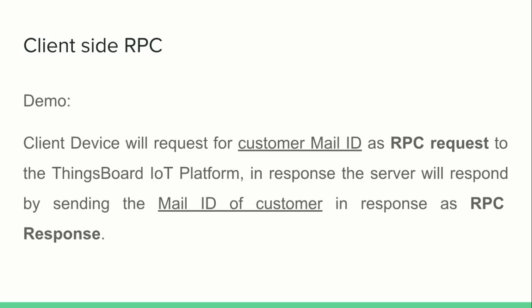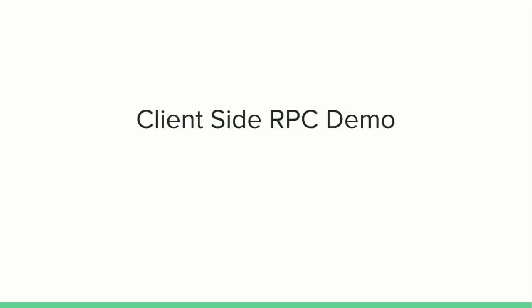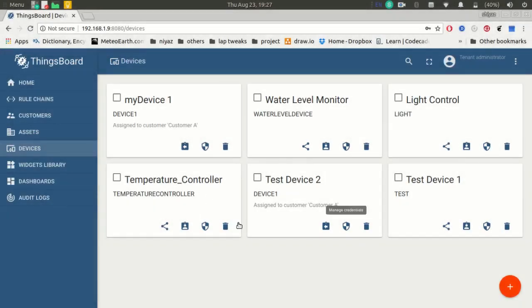In the demo, the client device will request a customer email ID as an RPC request to the ThingsBoard IoT platform. In response, the server will reply by sending the email ID of the customer as an RPC response. This is the ThingsBoard IoT platform which I installed locally on my system.